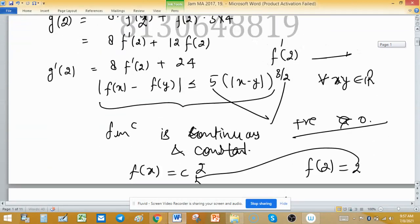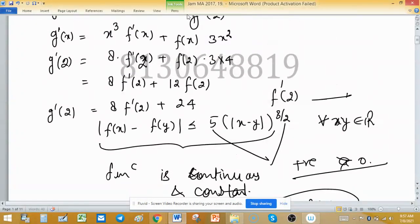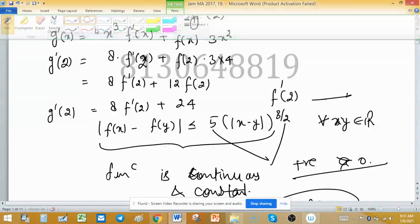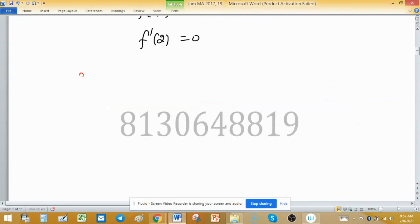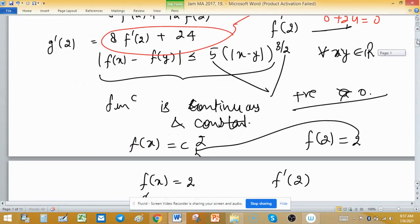So put f'(2) in the last step we obtained in this red part. Put f'(2) as 8 times 0 plus 24, so we have the value 24 because 0 plus 24 is 24. So g'(2), the value of g'(2) is 24. Now check which option: it is option (d).